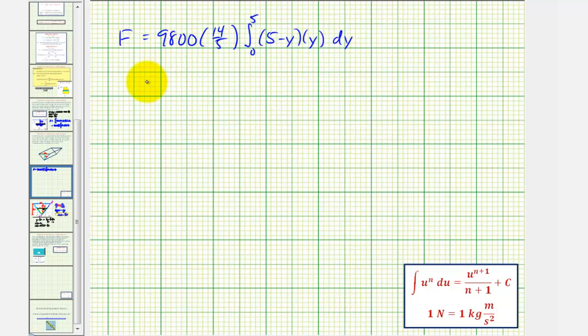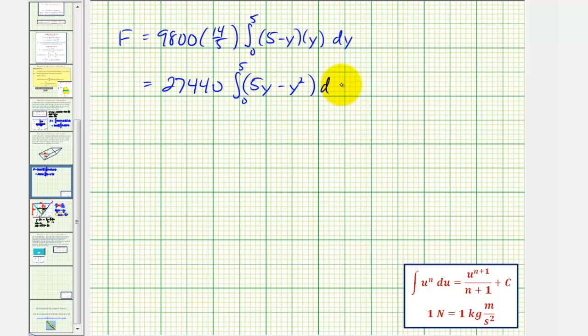This product here comes out to 27,440. Let's go ahead and distribute. So we have 5y - y². Now we'll find the antiderivative.